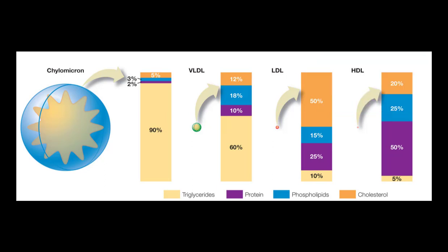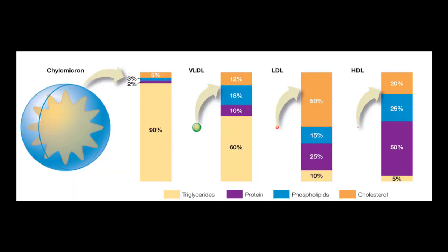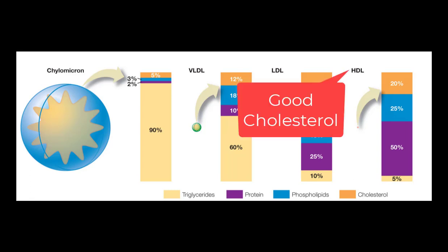The liver also makes what you might call cholesterol vacuums — they're called HDLs, high-density lipoproteins. These suck up the cholesterol from the blood and return it to the liver for reprocessing. Hence, HDLs are called good cholesterol.